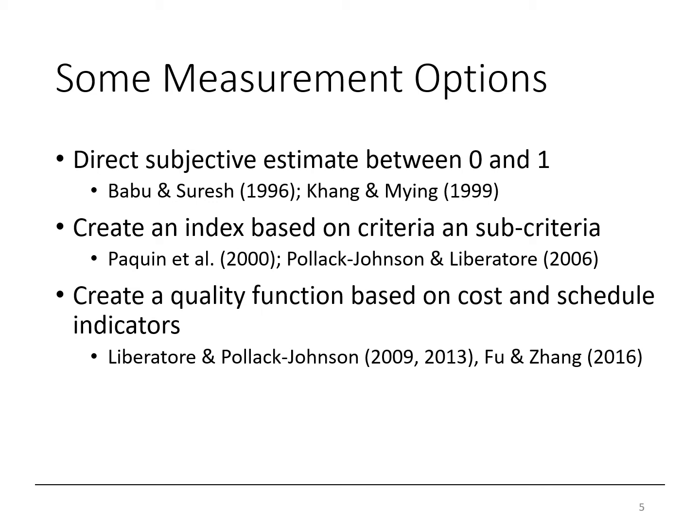Later, some researchers created an index based on various quality criteria and sub-criteria. Then finally, the third approach is to create a quality function, which is a function of cost and schedule indicators. This is the approach that we are going to investigate in more depth.